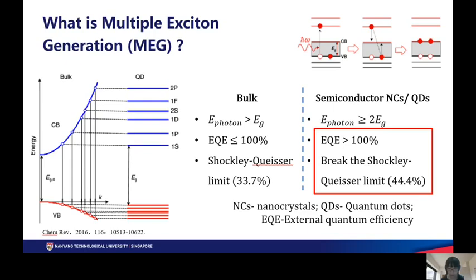Instead of converting to heat, the excited carrier passes energy to another valence-band electron and excites it across the band gap.